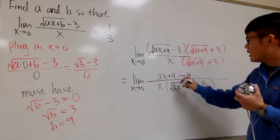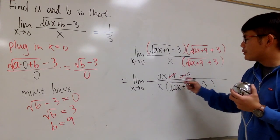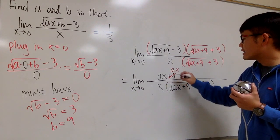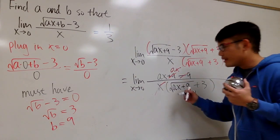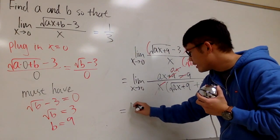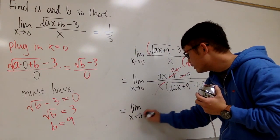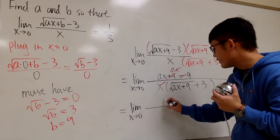And now, 9 minus 9 cancel out. On the top, you have just ax, and this x and that x cancel each other. So, this is the limit as x is approaching 0. On the top, we only have an a. On the bottom, we have square root of ax plus 9, and then plus 3 after that.